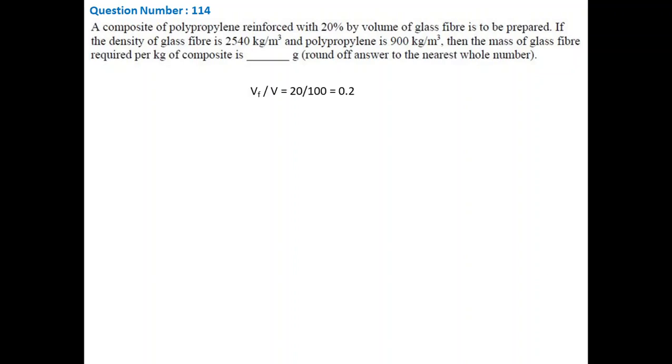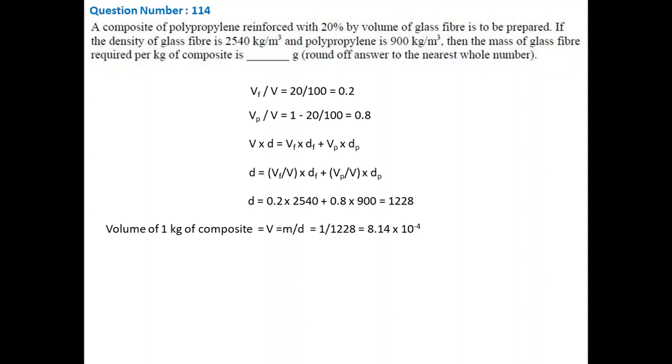As volume fraction of glass fiber is given, so the volume fraction of polypropylene will be 1 minus volume fraction of glass fiber. Considering mass balance, the volume of composite multiplied by density will be equal to sum of volume multiplied by respective density of glass fiber and polypropylene. As volume fraction and density are given, we can put those values in the equation and then calculate the density of the composite. Once density is known, we can calculate the volume of 1 kg of composite and then calculate the mass of glass fiber per kg of composite, and the value is 414 grams.